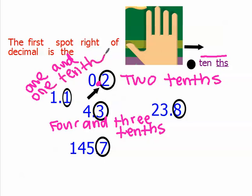I want you to write what this number is. We have 145 and there's a decimal point and 7 tenths.